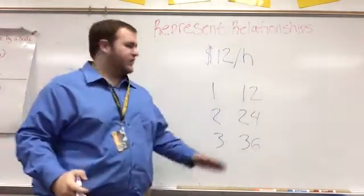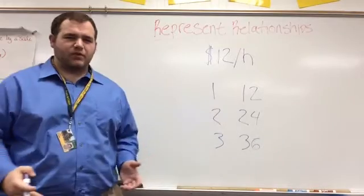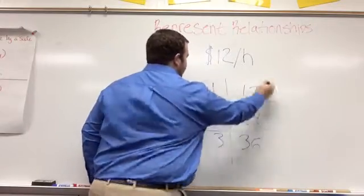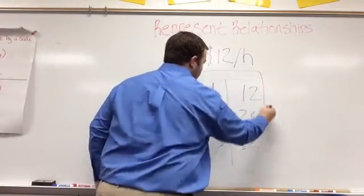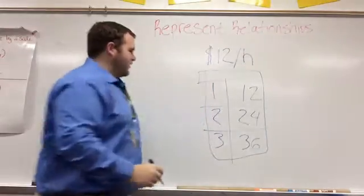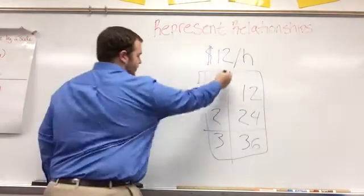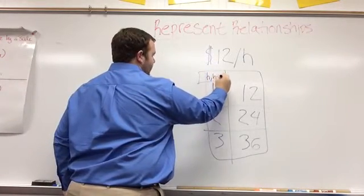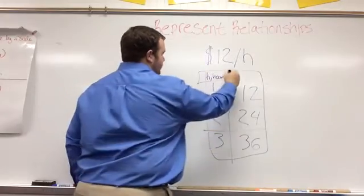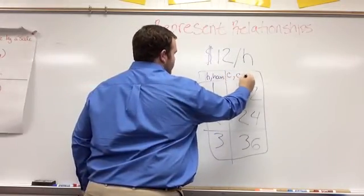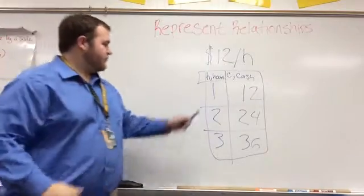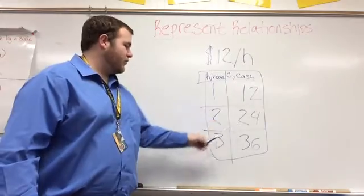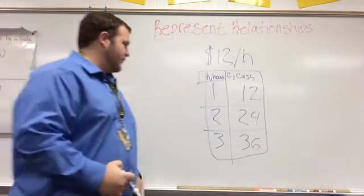The first way to represent this data is something we'll all be familiar with. It'll be a table, so you can go ahead and create our table. Instead of using X and Y we're gonna do something a little different. Here on the left side we have H for hours, and then here's how much money we're making, so we'll do C for cash money. So here we work one hour make $12, two hours $24, three hours $36. We should all be familiar with this.